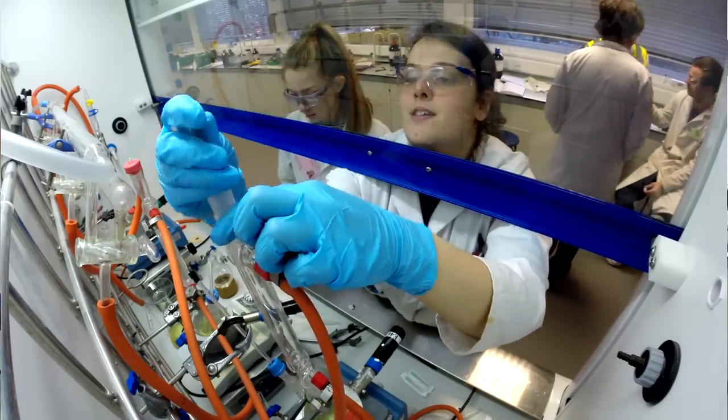The experiment we've been set is to create a monomer, which is a small chemical unit, and then synthesize it into a polymer, which is lots of these units joined together - just a really small chemical in a long chain.